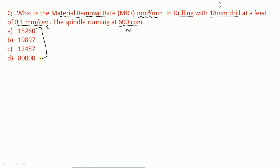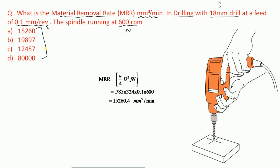For drilling, the material removal rate formula is: MRR = (π/4) × d² × f × n. We know d is the drill diameter, f is the feed, and n is the spindle speed. Substituting the given values gives us the result, and we can conclude that option A is correct.